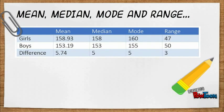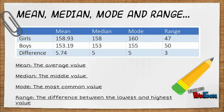Here we have a table showing the mean, median, mode and range of both the boys' and girls' recordings. We can see from this table that the average arm span for girls was wider than the average arm span for boys. We can also see that the most common arm span for girls was higher than the boys. This was done by comparing the mean, median, mode and range from both genders.